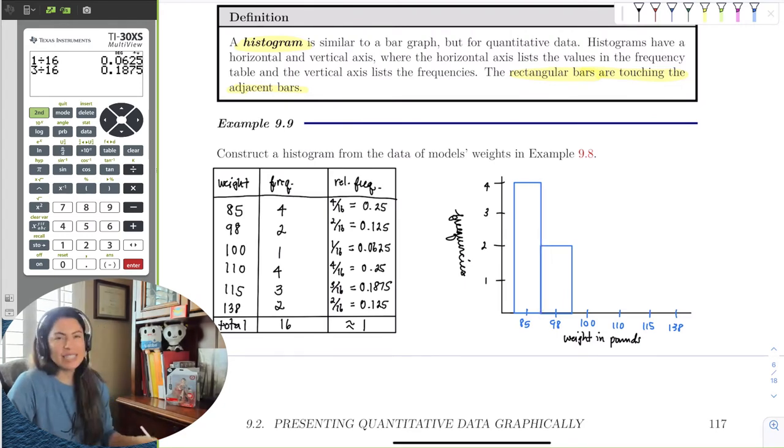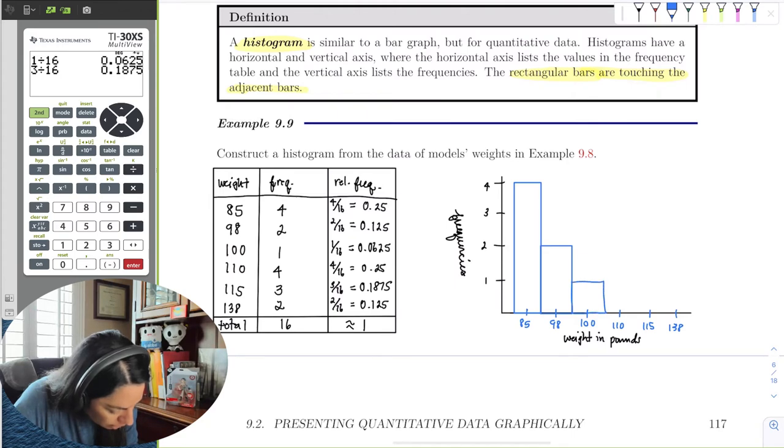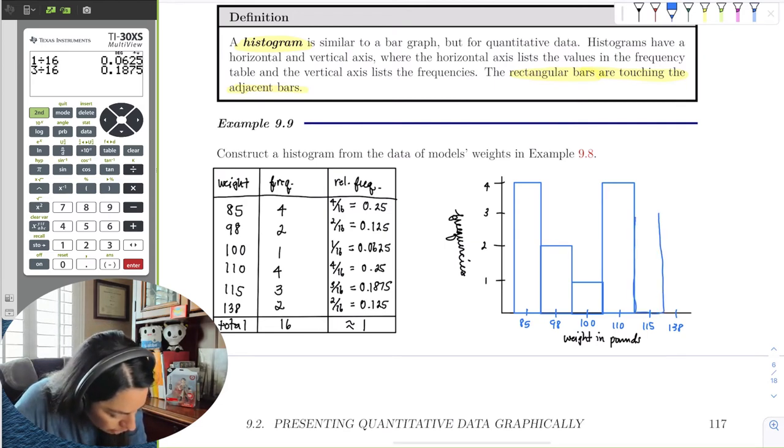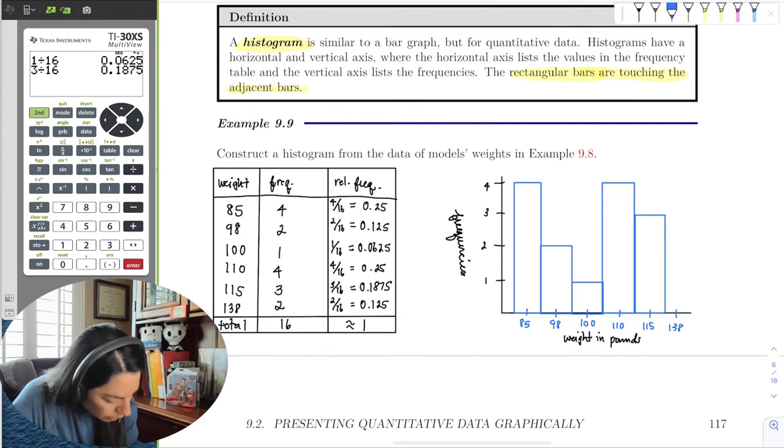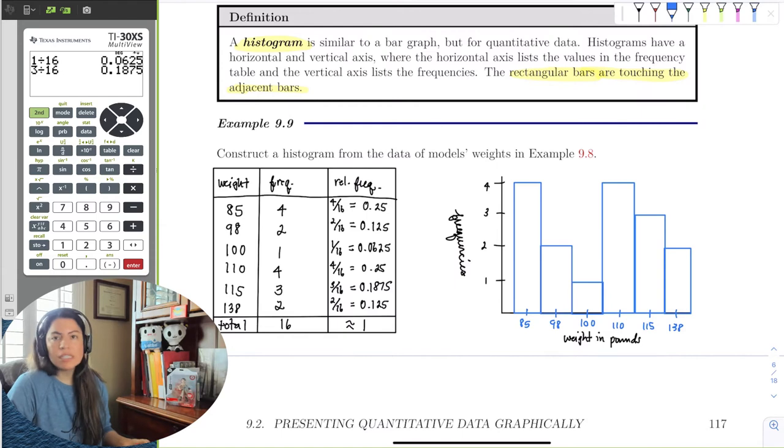Now there are 2 models that weigh 98 pounds, so my height would be 2, but notice I'm going to touch the rectangles. So notice that they're touching right here. It's hard for me to make the same size. I'm sure you're a much better artist than I am. So just do your best, but the bars should just be touching. And then there was 1 model at 100 pounds. 4 models at 110, so it's going to go pretty high. 3 models at 115. And then 138, 2 models. I'm able to resize it so it looks a little nicer.